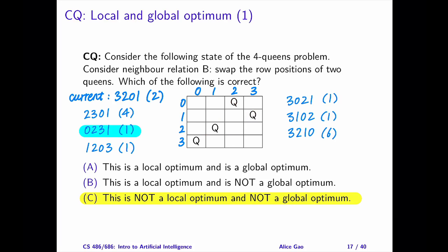Now, we can see that the current state is not a local optimum since at least one state, 0231, has a strictly lower cost.